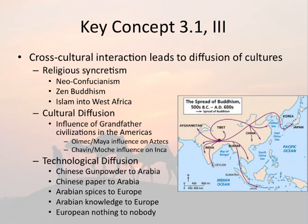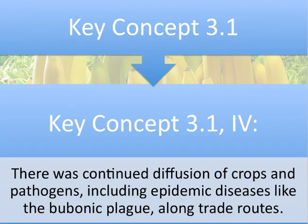You also see cultural diffusion in the Americas, where grandfather civilizations influenced larger civilizations — the Olmec and Mayan influences on the Aztecs, and the Chavin and Moche influences on the Incan empires. In addition to cultural diffusion, you also see technological diffusion. The most important technological advances of this time are those pioneered in China — gunpowder and paper specifically — both of which traveled to Arabia and eventually on to Europe. Key Concept 3.1, Roman numeral 4 says there was a continued diffusion of crops and pathogens, including epidemic diseases like the bubonic plague, along the trade routes.